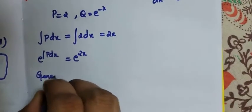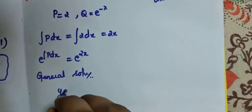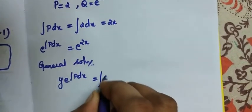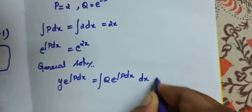So what is the general solution? The general solution is y·e^(∫p dx) = ∫q·e^(∫p dx) dx + c.